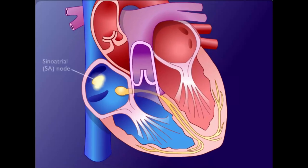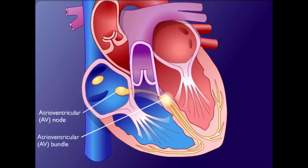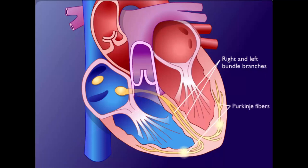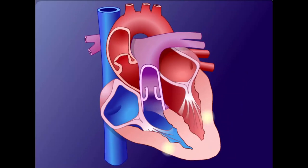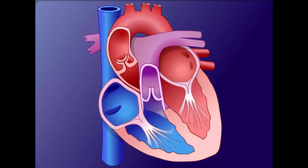Action potentials originate in the sinoatrial node and travel across the wall of the atrium to the atrioventricular node. They pass slowly through the AV node to give the atria time to contract, then rapidly along the atrioventricular bundle through the fibrous skeleton into the interventricular septum. The AV bundle divides into right and left bundle branches, and action potentials descend rapidly to the apex of each ventricle. Purkinje fibers carry the potentials to the ventricular walls, allowing ventricular muscle cells to contract in unison for a strong contraction.